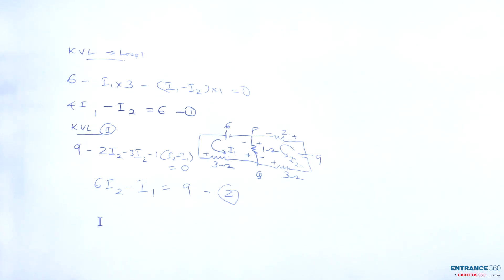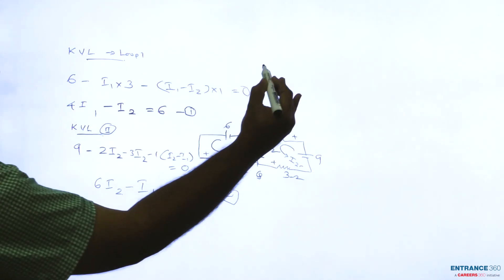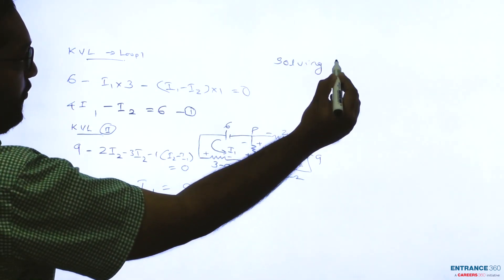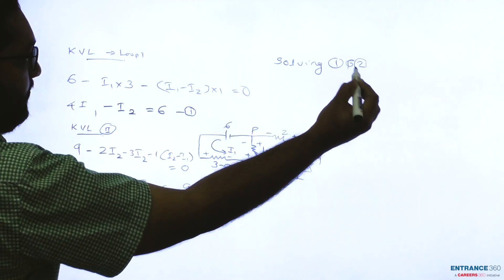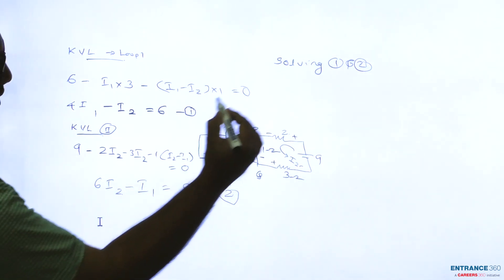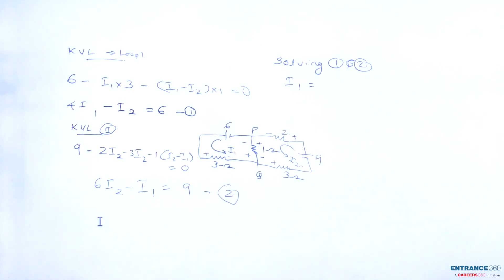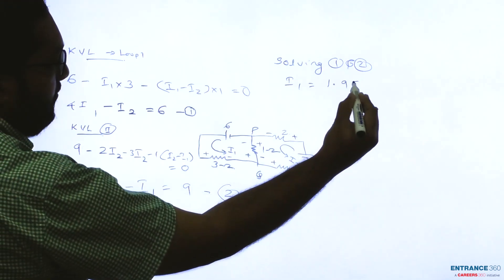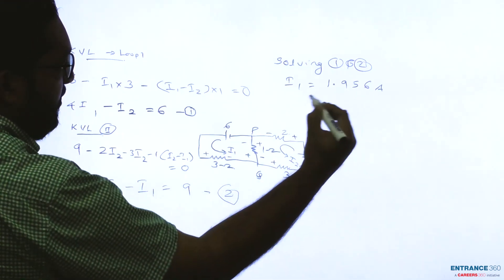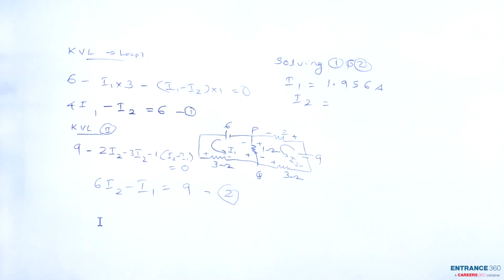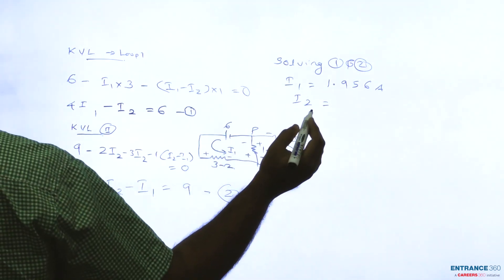Now solving, you will get I1 equal to 1.1956 ampere and I2 equal to 1.826 ampere.